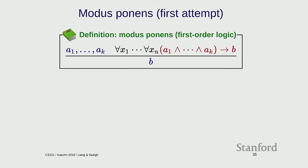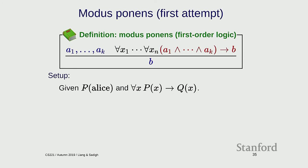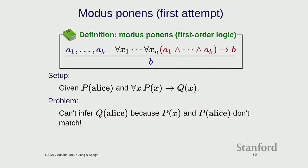Let's do modus ponens. A straightforward generalization: you have atomic formulas A1 through Ak and a rule A1 through Ak implies B, and you derive B. But this first attempt won't work. Suppose you have 'P(Alice)' and 'for all x: P(x) implies Q(x)'. You can't infer 'Q(Alice)' because P(x) and P(Alice) are not syntactically the same A1. This is an important lesson — inference rules are just pattern matching with no intrinsic semantics. If patterns don't match, it won't work.